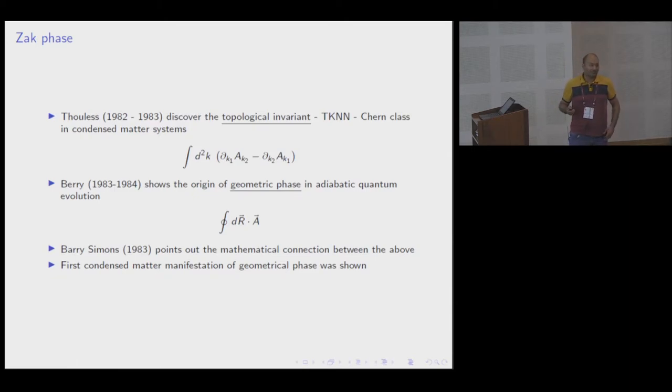Around 1982-83, Thouless was looking at the Hall effect problem and transport properties in lower dimensional condensed matter systems. In that context, he came up with what is now called the TKNN invariant, or what mathematicians would call the Chern classes or Chern numbers, which have this kind of structure over a two-dimensional Brillouin zone. This was discovered almost in an accidental manner when Thouless and co-workers were looking at transport properties.